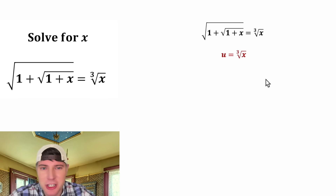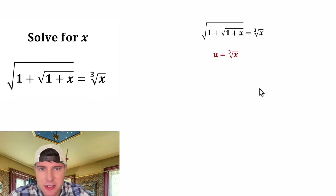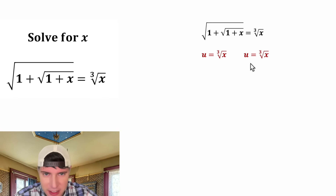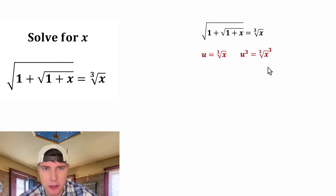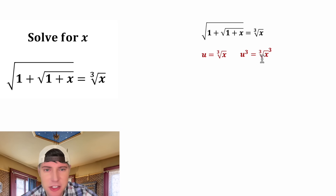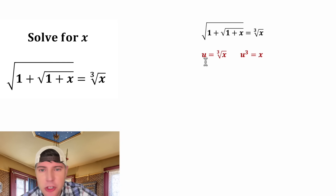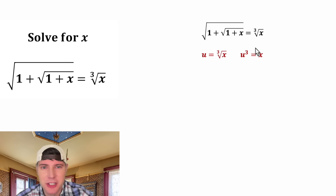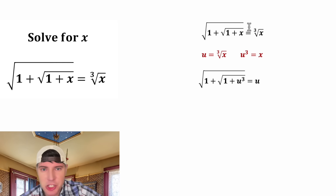Let's do some u substitution. I want to set u equal to the cube root of x. Then let's copy it down again and cube both sides of the equation. On the left-hand side we'll have u cubed, but on the right-hand side this cube root and this cube will cancel each other out. So now we have u is equal to the cube root of x, or u cubed is equal to x. And now we're ready to substitute into this — we change x into u cubed, and the cube root of x gets changed into u.